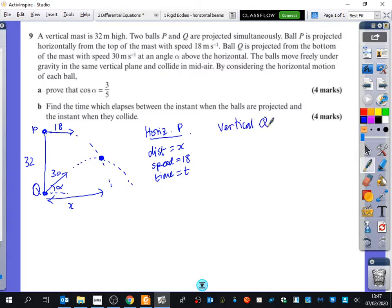Then I'm going to look at horizontal motion for Q. Now, if we look at the horizontal motion for Q, we know that it's also travelling X metres in the horizontal direction. And its speed horizontally is 30 cos alpha. We know that the same time that it's travelling in is the same time that this one is travelling in to get to that point. So however we want to set this up, I don't think it really matters.